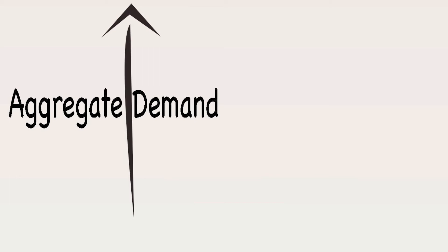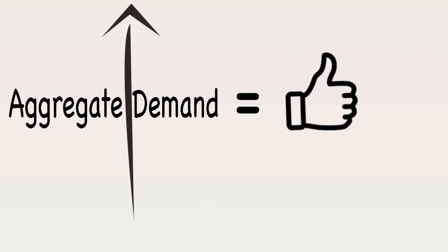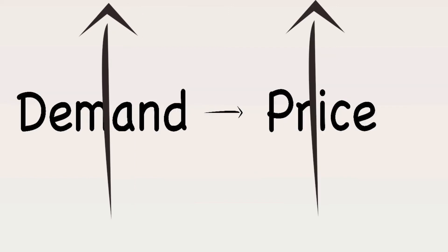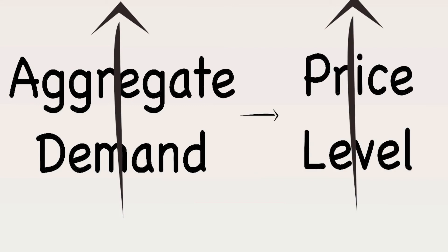When Americans collectively do this, the overall demand — or aggregate demand — for goods and services increases, and more goods and services being purchased leads to a thriving economy. But as we know from basic economics, when demand for something increases and supply stays the same, the price increases as well. So when aggregate demand rises — the collective demand for all goods and services in the US economy — we also see a rise in the general price level.